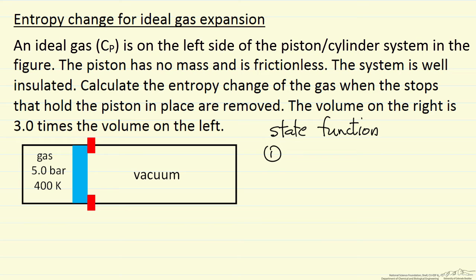Let's call the initial condition one, the final condition two. We are starting out at 400 Kelvin, 5 bar, and the volume V1. We don't know the actual volume, so when we calculate the entropy change, we are going to calculate the entropy change per mole.